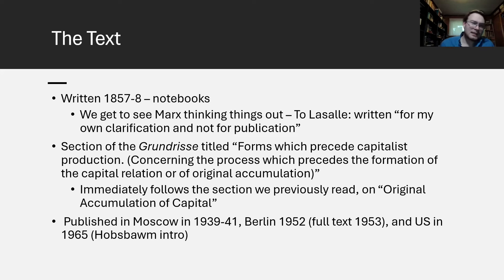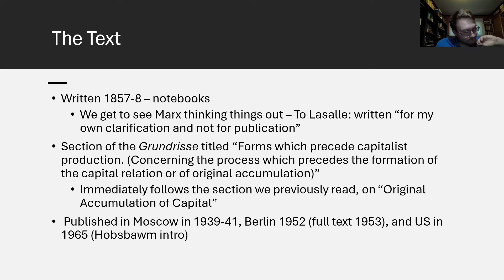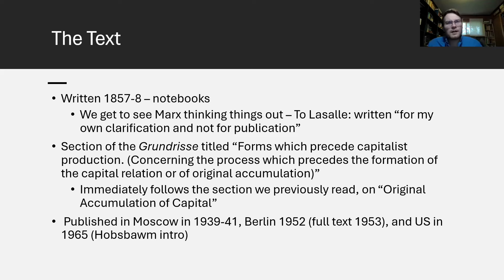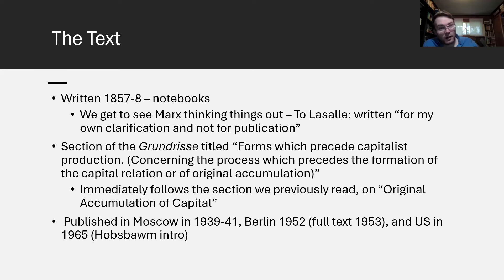This text was published in Moscow in Russian from 1939 to 1941. After 1917, Marx's publication history gets really complicated — there were things sitting in archives like the 1844 manuscripts. The selection on pre-capitalist economic formations was published as a pamphlet in 1952, the full text of the Grundrisse came in 1953, and then we get this English edition in 1965 with Hobsbawm's introduction.